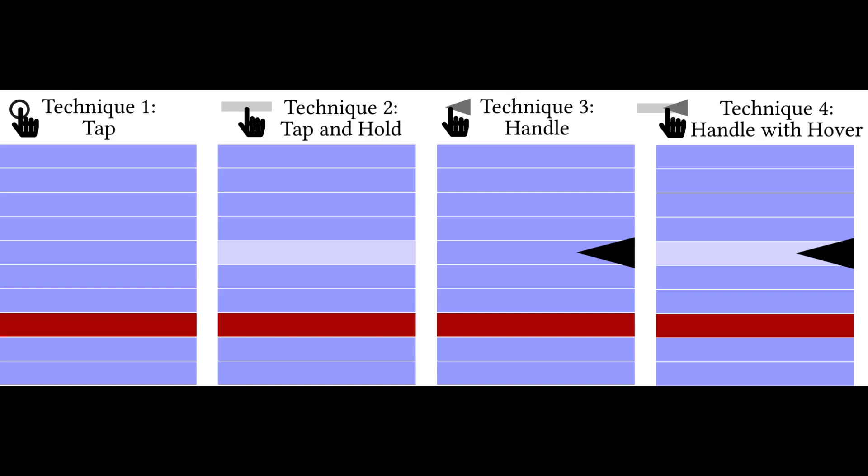The handle technique provided accurate positional information on where the selection would occur, similar to a mouse. And finally, the handle with hover technique combined the two types of visual feedback and provided position and item level visual feedback.